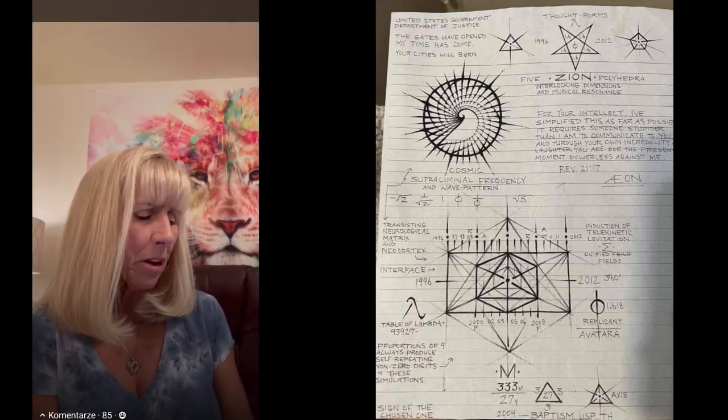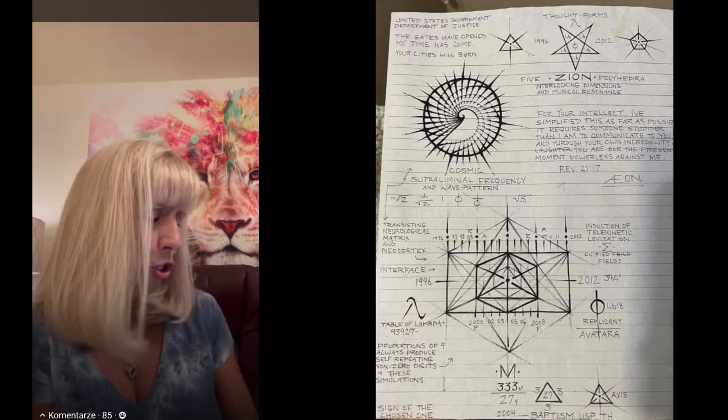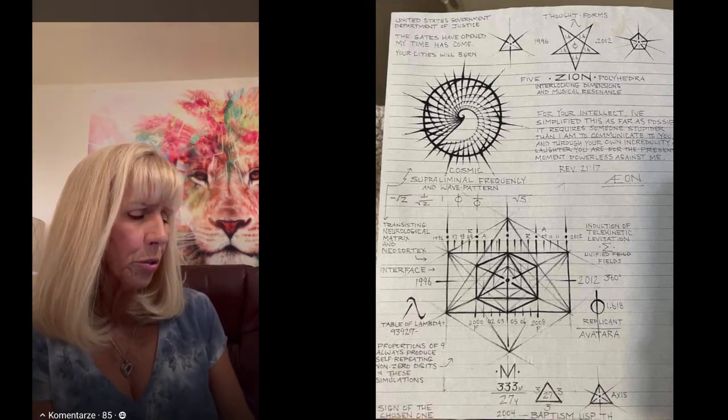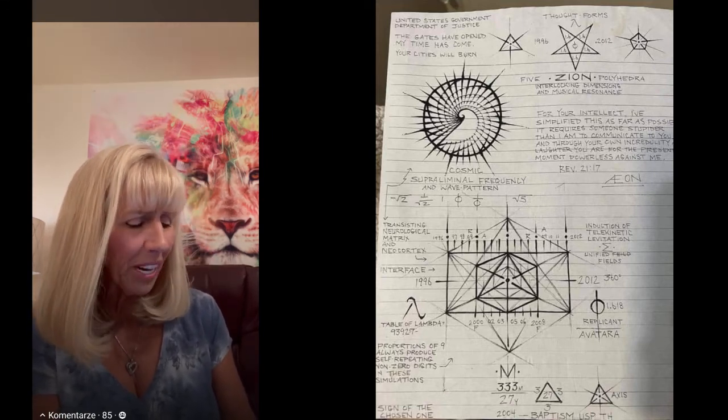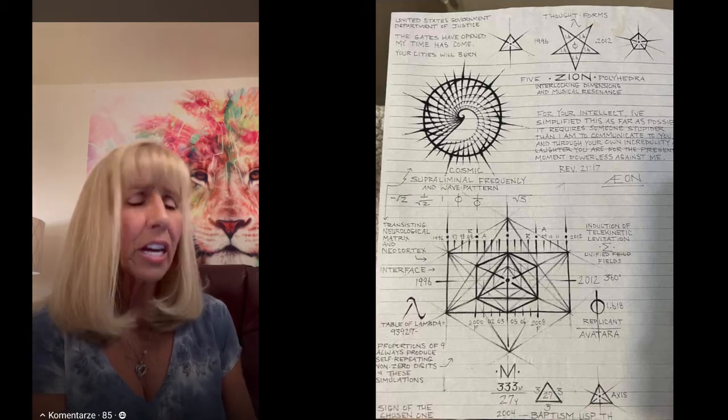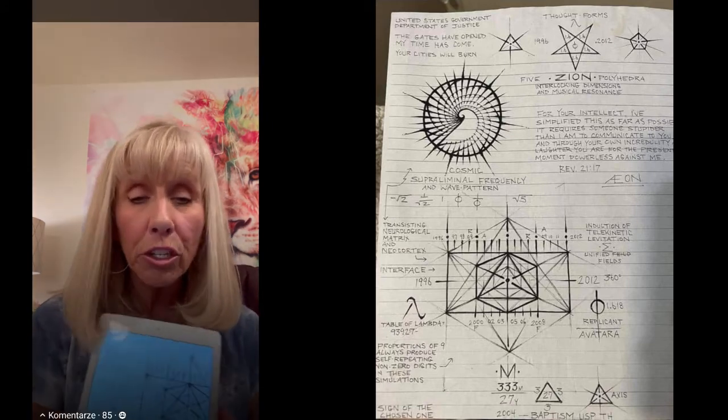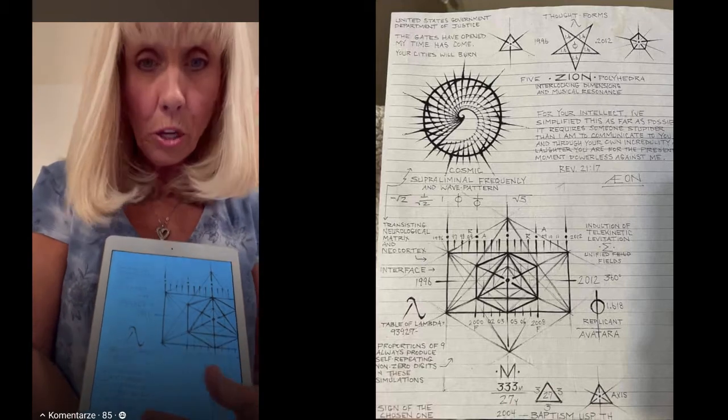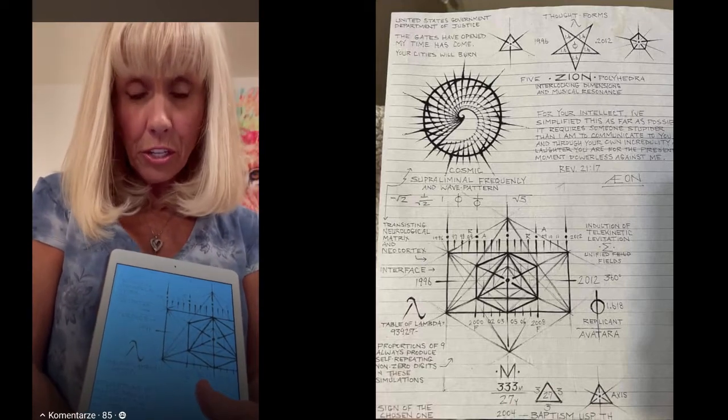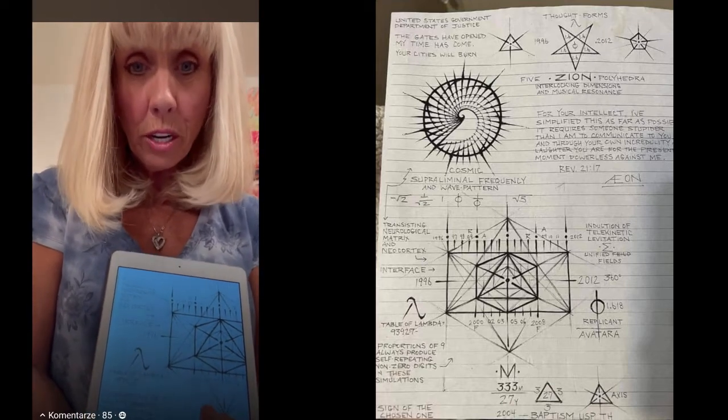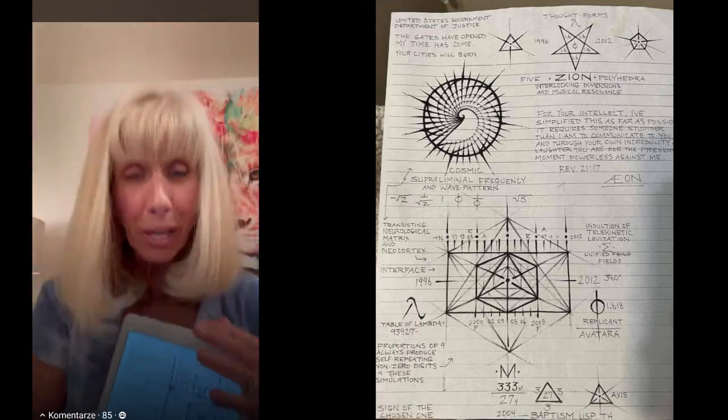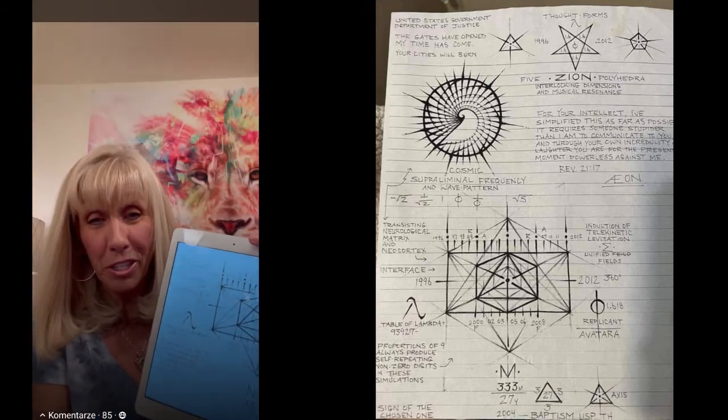He has written here: 'Proportions of nine always produce self-repeating non-zero digits in these simulations.' He understands this simulation. The number nine is the highest level in this game. That is completion in the game, when you wake up and you have done your hermetics and you have remembered who you are. You are a star.